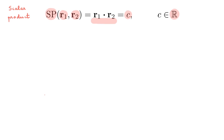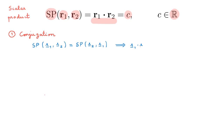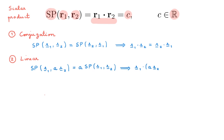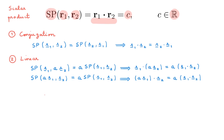The scalar product SP between two vectors R1 and R2 gives us a scalar C, which is a real number, and another way we typically write it is as the dot product R1 · R2. The scalar product comes with a number of properties. The first is conjugation: the scalar product between R1 and R2 equals the scalar product between R2 and R1, or equivalently R1 · R2 equals R2 · R1. The second property is linearity. In the second argument, the scalar product of R1 with A·R2 equals A times the scalar product of R1 with R2. In the first argument, the scalar product of A·R1 with R2 equals A times the scalar product of R1 and R2. Linearity also tells us that the scalar product of R1 with (R2 + R3) equals SP(R1, R2) plus SP(R1, R3).